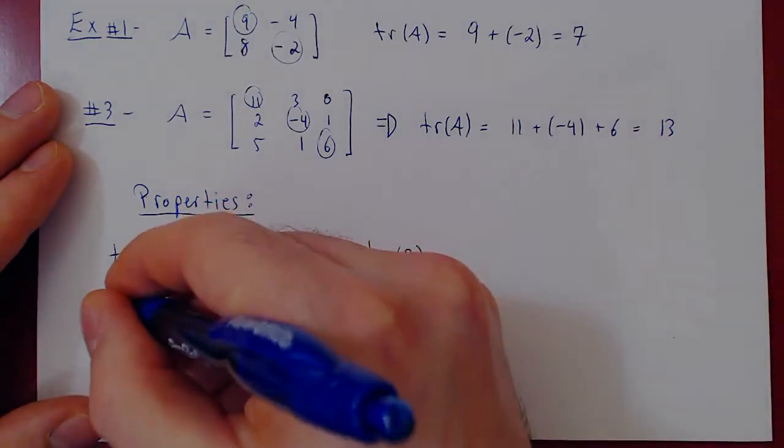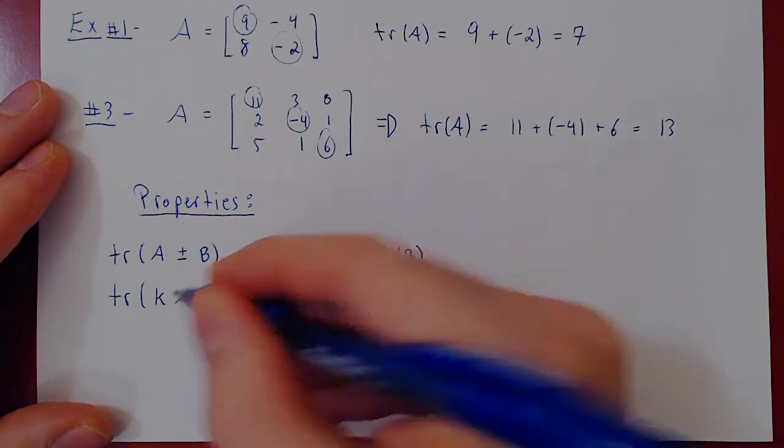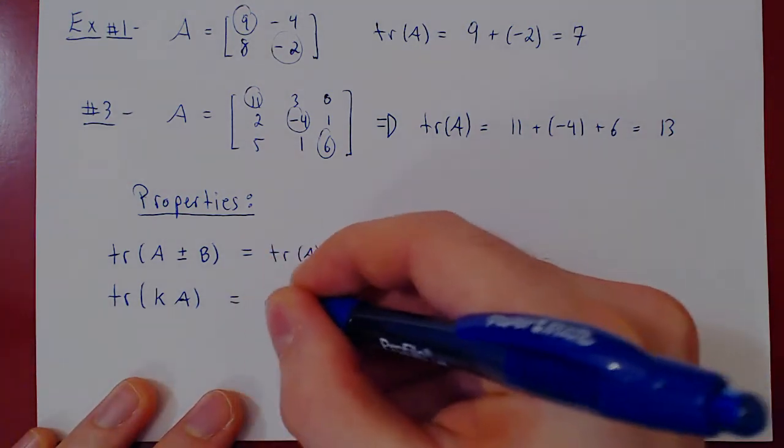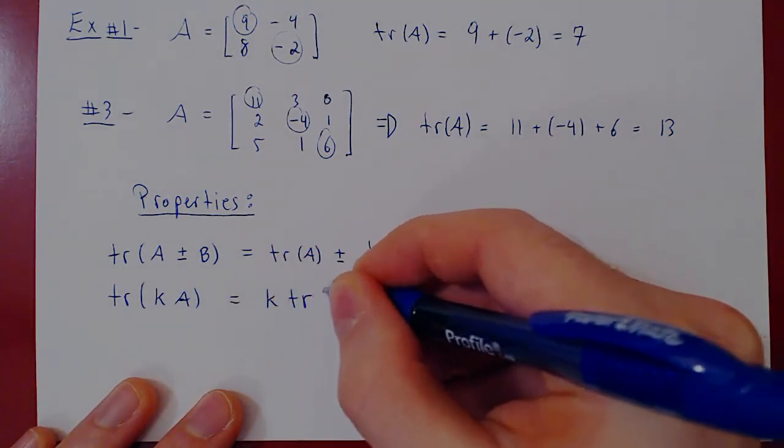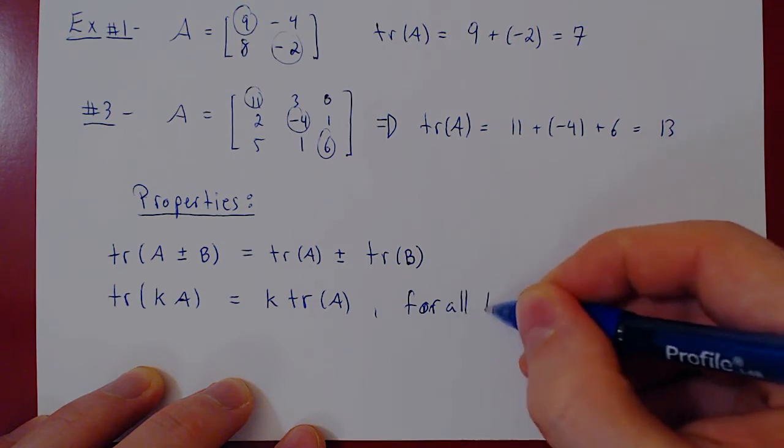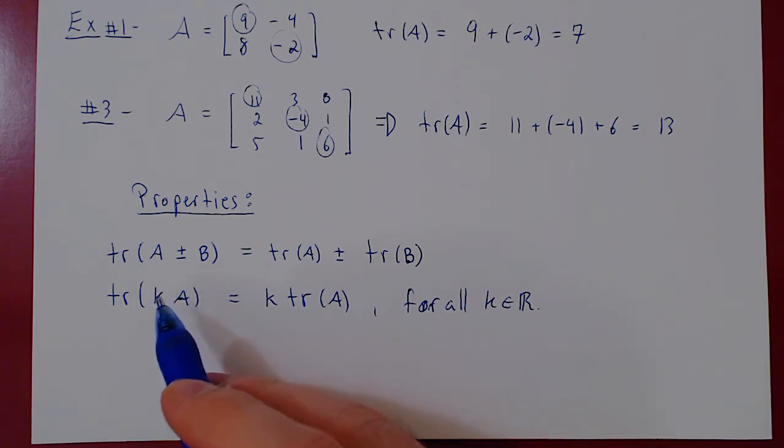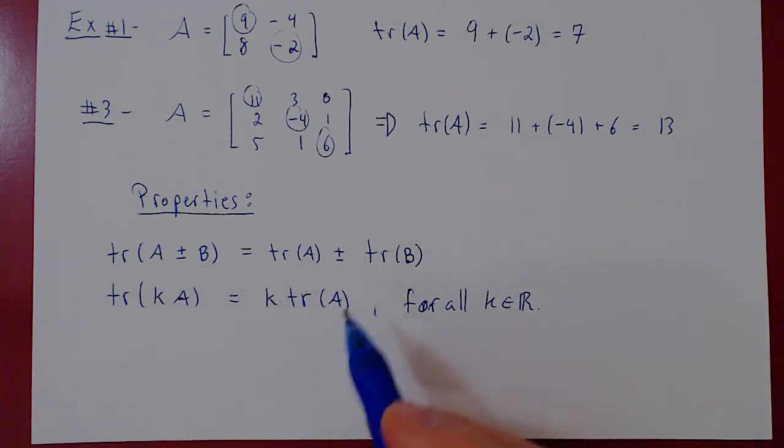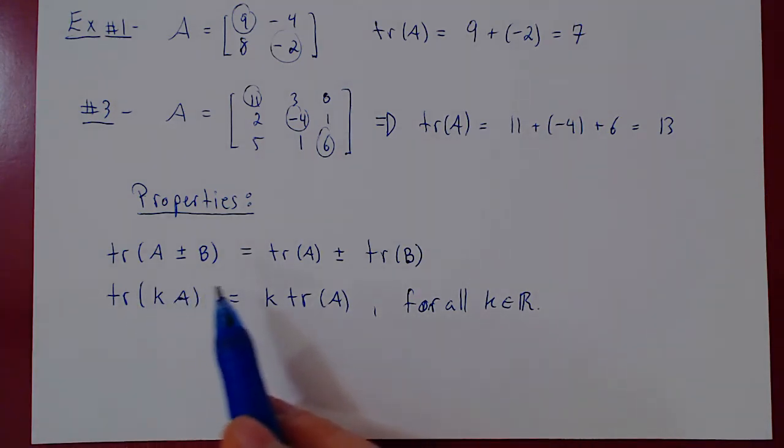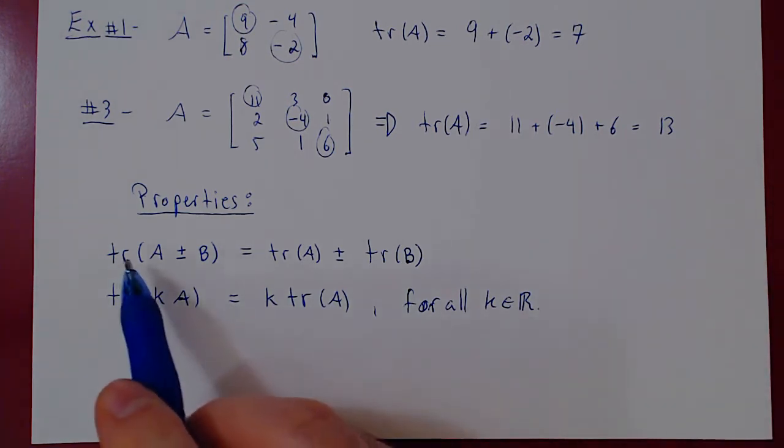Other properties. The trace of k times A, where here k is a real number, you can simply move the real number outside of the trace. This happens to be k times the trace of A. And this is true for all real numbers k. So for any square matrix A, any real number k, the trace of kA equals k times the trace of A. This again, I will leave the proof to you as an exercise. And this should take you no more than just one line. Very simple property, very easy to prove.